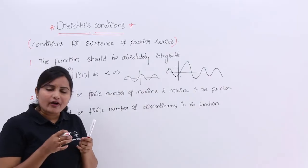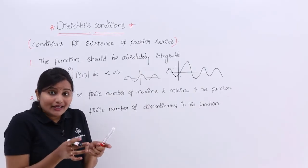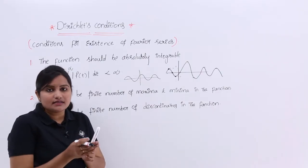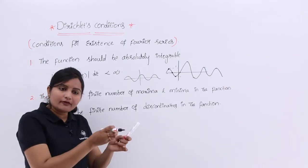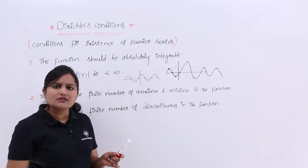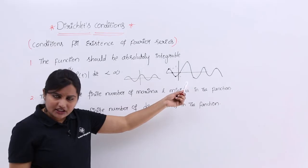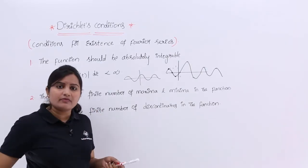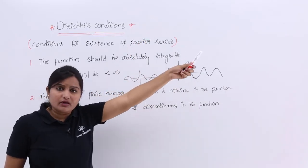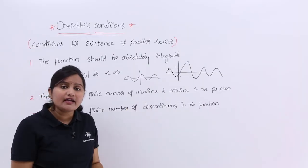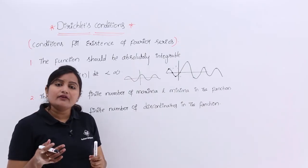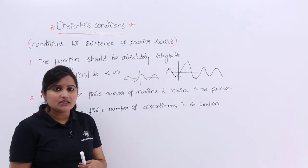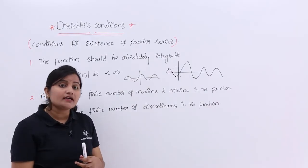If you have a finite number of maxima and minima, then you can give a precise definition for that signal. If you can give a precise definition, then you can integrate or analyze that signal and represent it using complex exponentials or any other basis. But if you are having infinite number of maxima — for example, 1 at one peak, 2 at another, 3 at another, up to infinity — then you cannot trace the signal at all, and therefore you cannot represent it by any representation, including Fourier series.